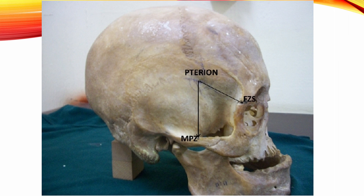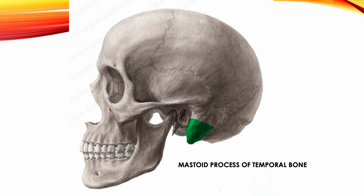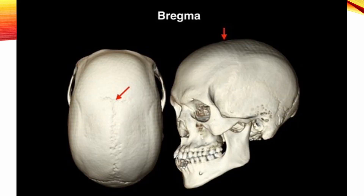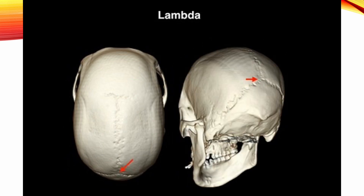The anterior branch of the superficial temporal artery is located in this area; it is the most fragile area of the skull. Mastoid process of the temporal bone is a round process located posterior and inferior to the ear. External occipital protuberance is the midline ridge on the posterior and inferior part of the occipital bone. Bregma is a connecting area between the frontal bone and the parietal bones; it is an intersection point of the coronal suture and the sagittal suture, and it is the site of the anterior fontanel. Lambda is located at the junction of the sagittal and lambdoid sutures; it is the site of the posterior fontanel, 6 cm above the external occipital protuberance.